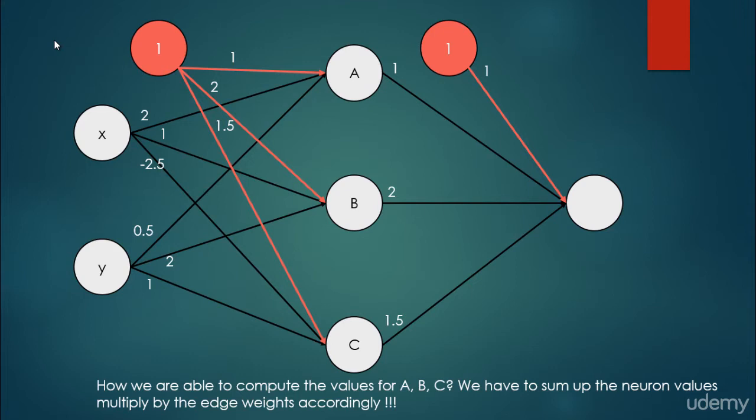The problem is how we are able to compute the values for A, B, and C. We have to sum up the neuron values multiplied by the edge weights accordingly. For example, if we want to calculate the value for A, we have to consider the bias neuron and the bias edge pointing to it, then the X neuron and its corresponding edge, and of course the directed edge from Y to A.